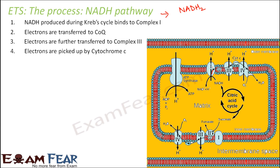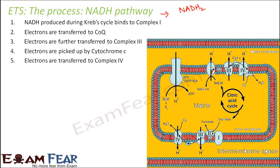From complex 3, the electrons are picked up by cytochrome C, which is present on the outer side of the membrane. Cytochrome C is again a mobile carrier and it transfers the electrons to complex 4. So now the electrons have reached complex 4.